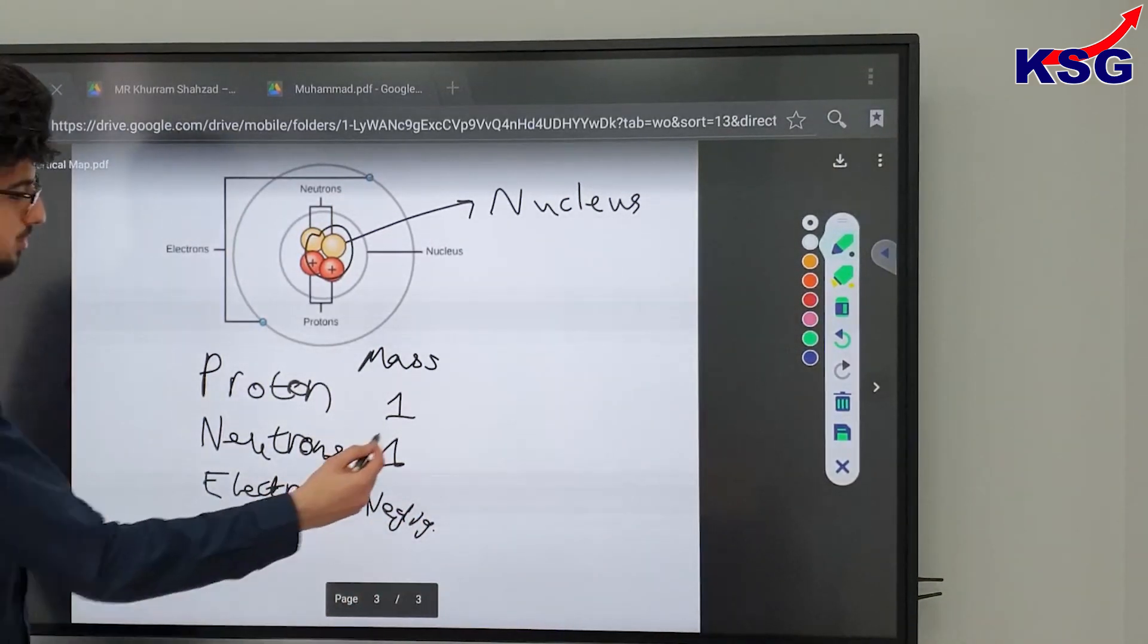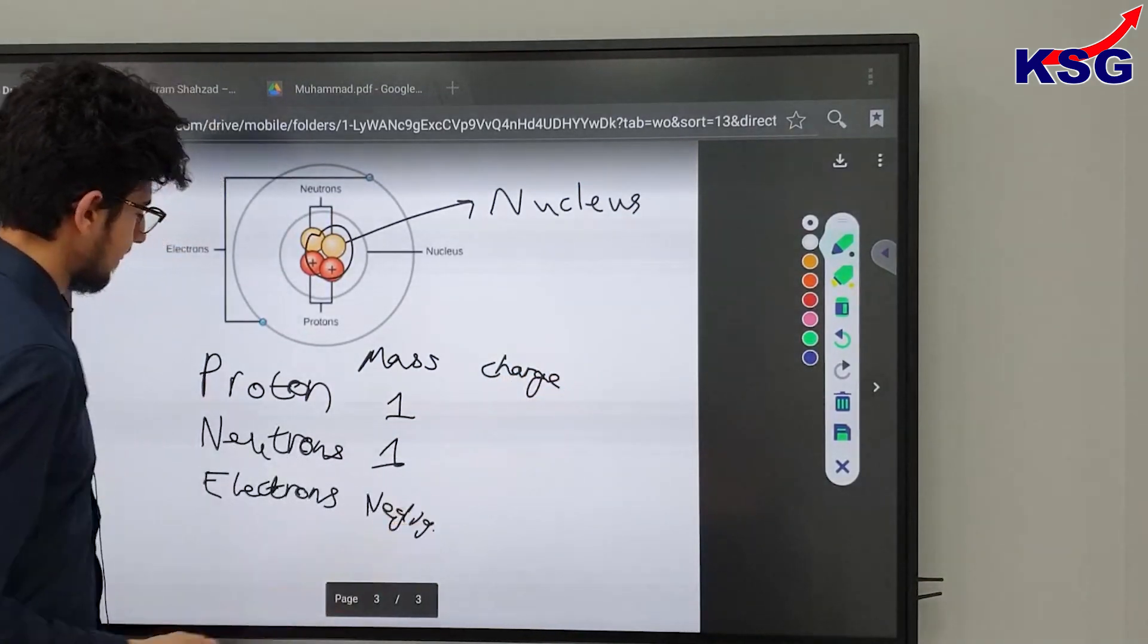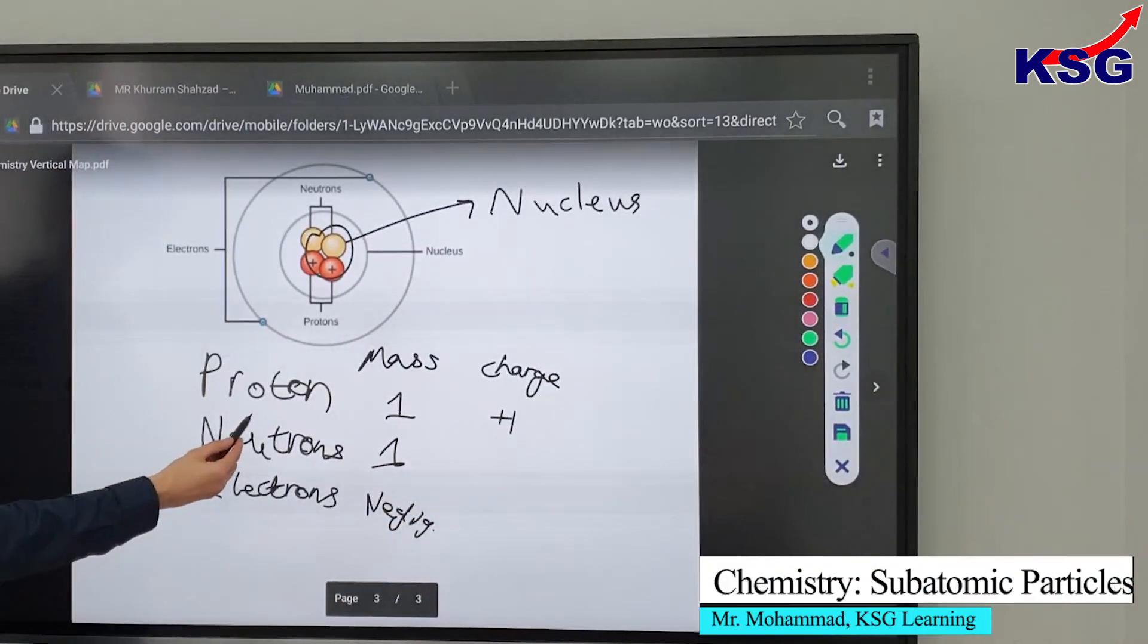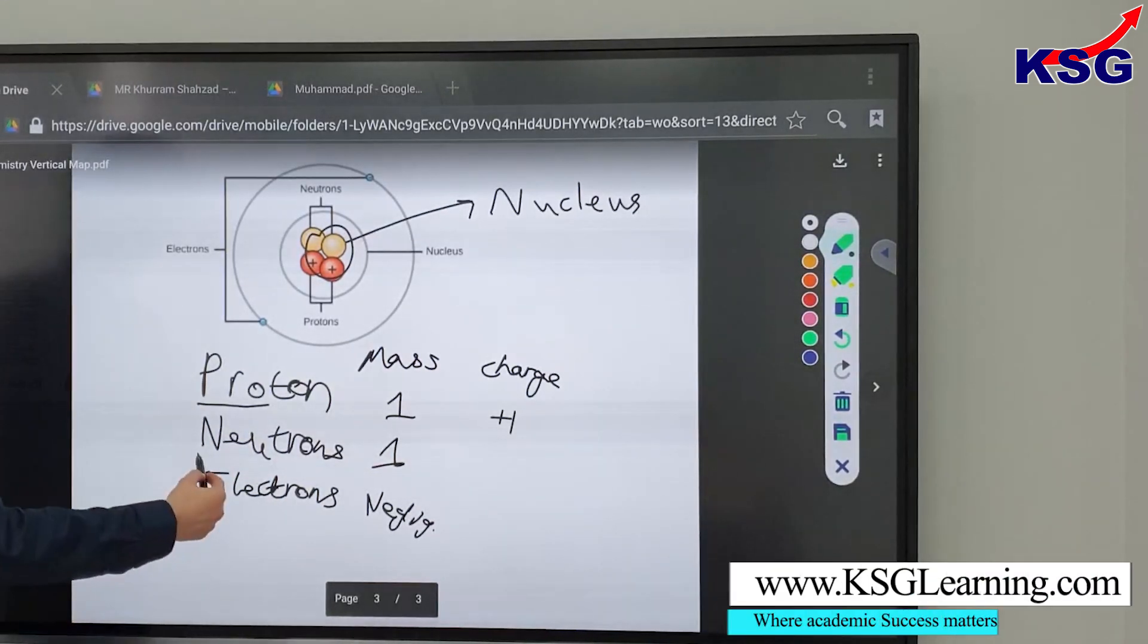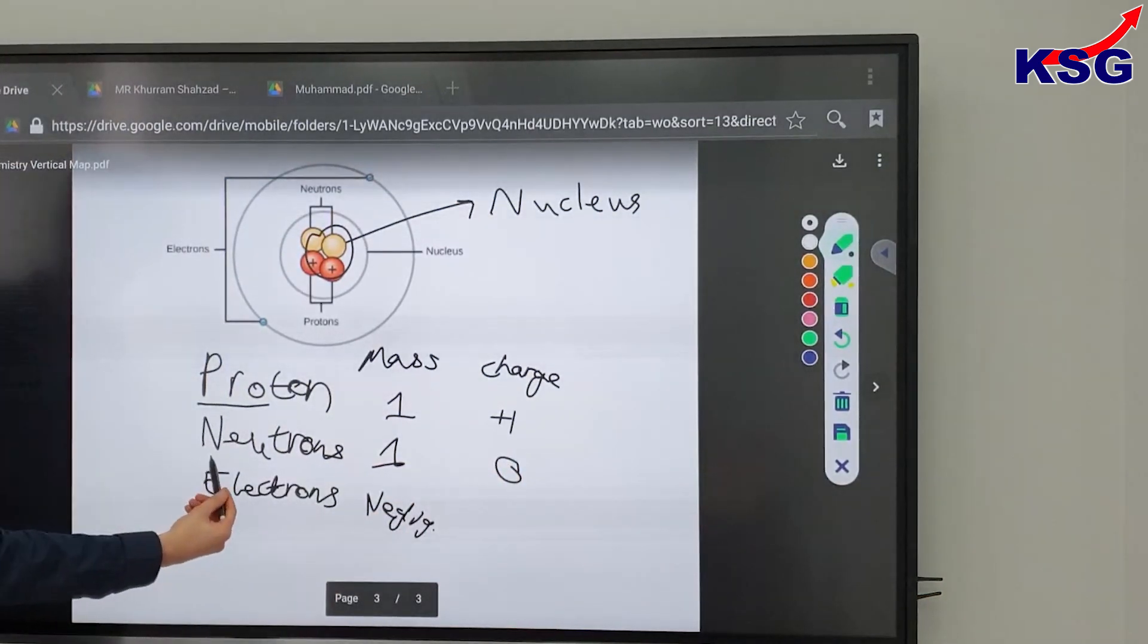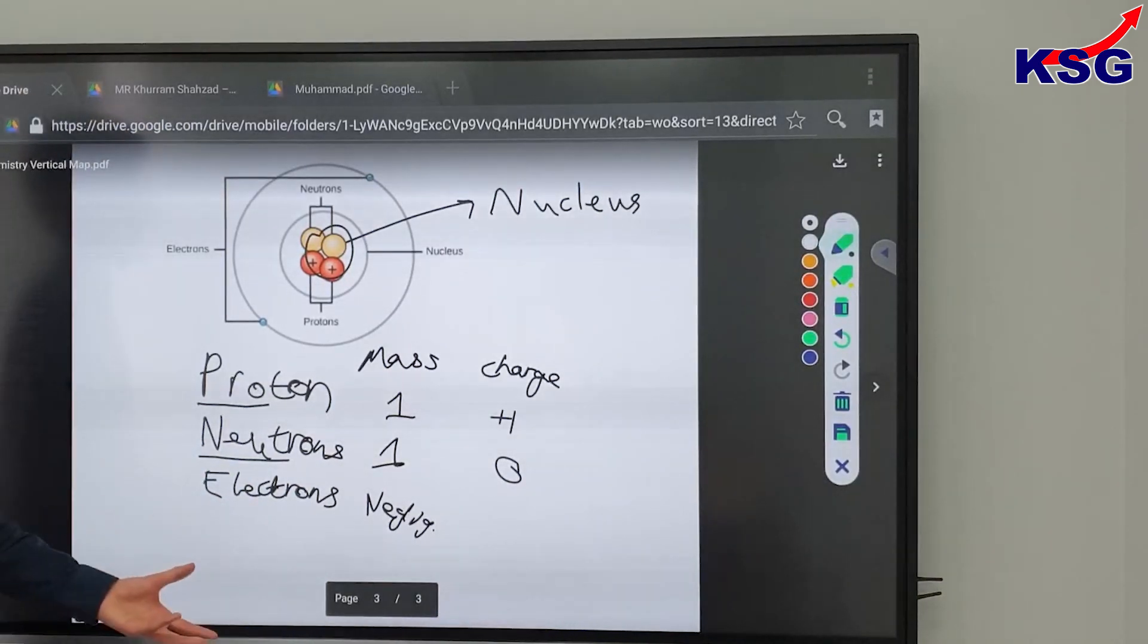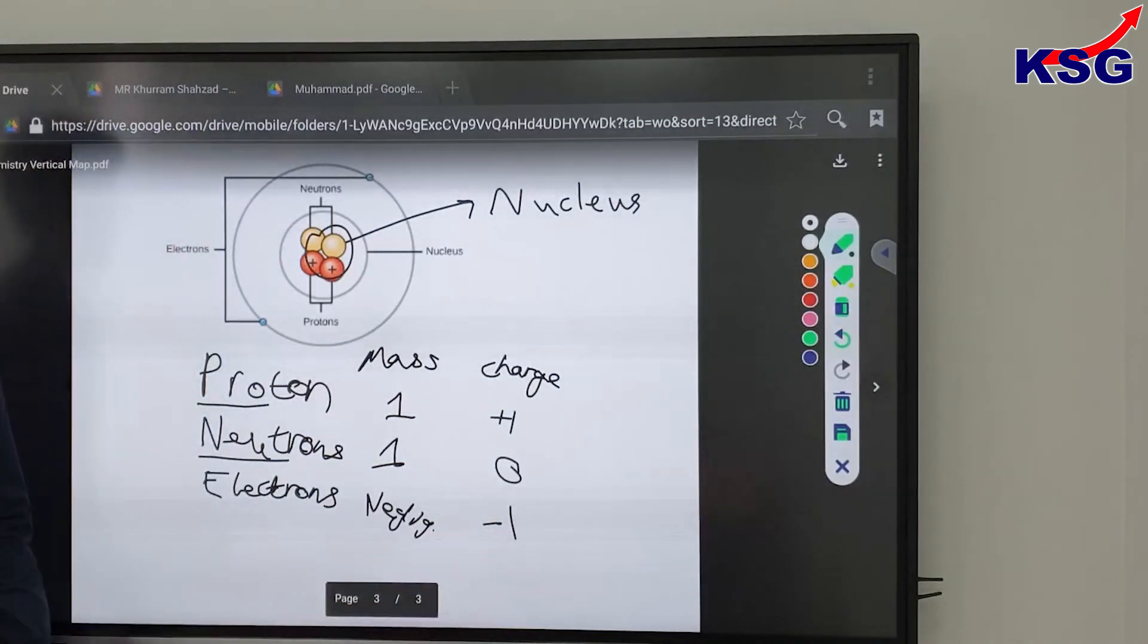Now what about their charge? So protons are plus one. How can we tell this? Well actually there's a probe in the word, so that tells you it's plus one. Then we have neutrons which are zero. Is there a way we can find that out? Well here we have neutral, which sounds like neutral, and therefore the charge is going to be zero. And as the only one left over, electrons are going to be minus one.